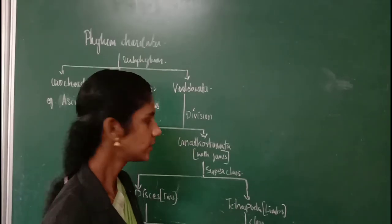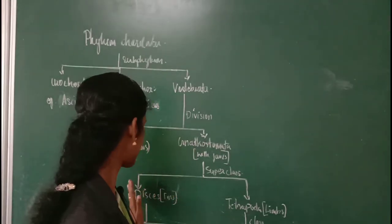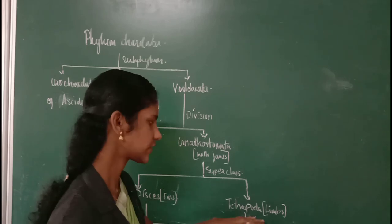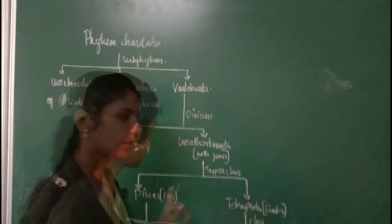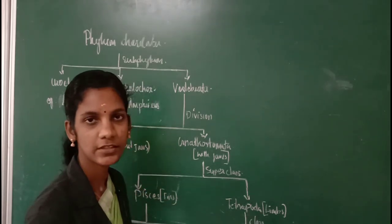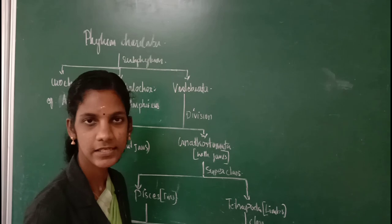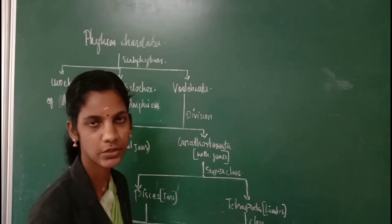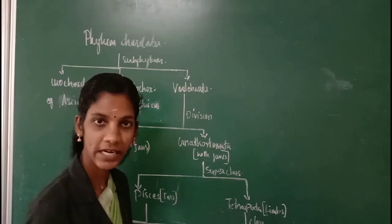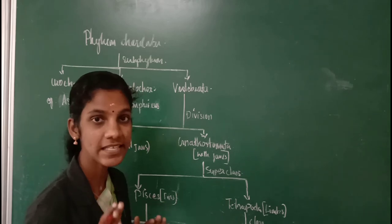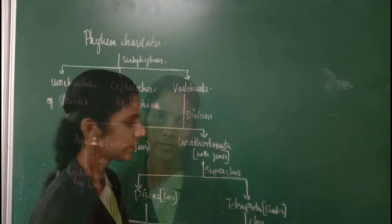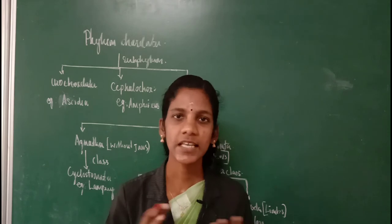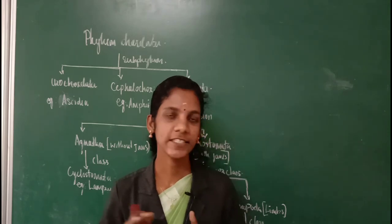As told earlier, Gnathostomata can be divided into two superclasses: Superclass Pisces and Superclass Tetrapoda. Let's study the difference between Superclass Pisces and Superclass Tetrapoda.